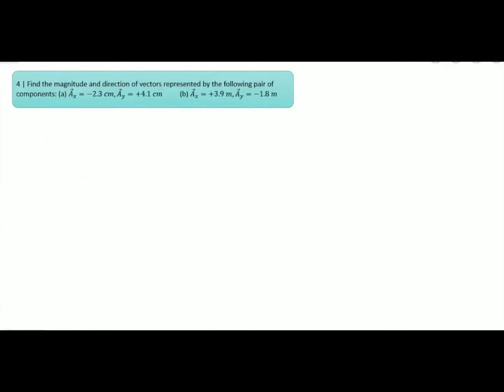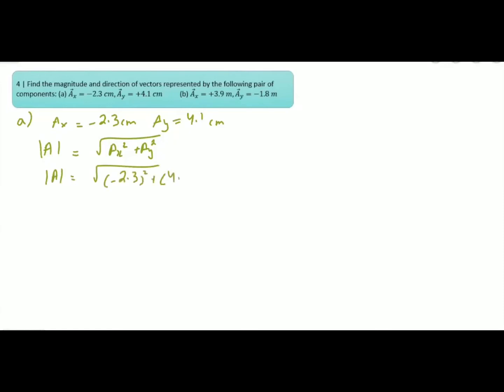Question number four: find the magnitude and direction of the vectors represented by the following pairs of components. Part A: Ax = −2.3 cm, Ay = 4.1 cm. The magnitude of vector A = √(Ax² + Ay²) = √((−2.3)² + (4.1)²) = 4.7 cm. To find the direction: θ = tan⁻¹(Ay/Ax) = tan⁻¹(4.1/−2.3) ≈ −60.7°, or 60.7°.